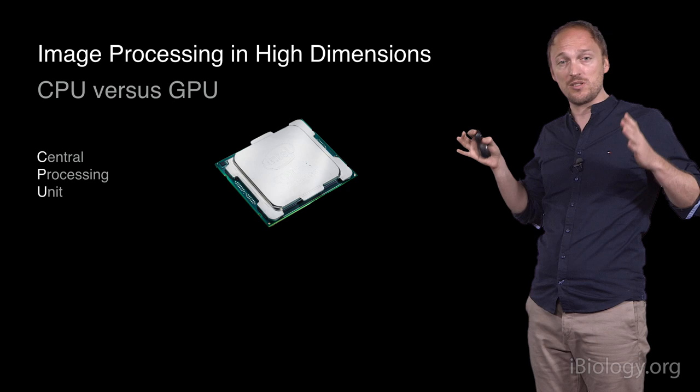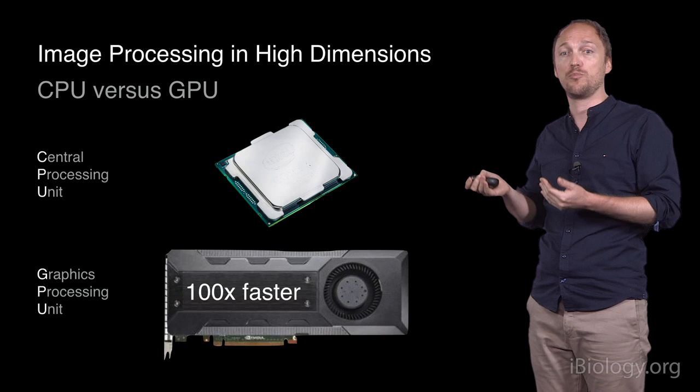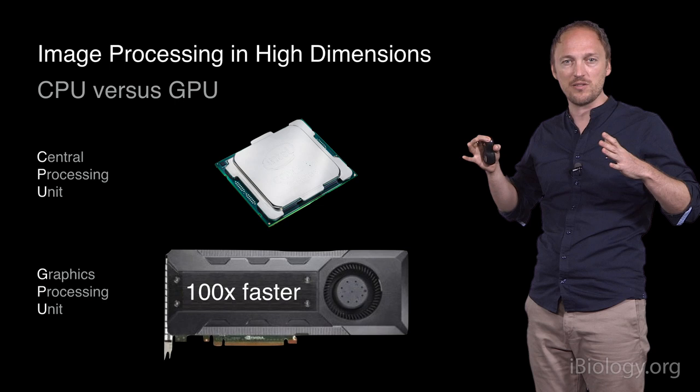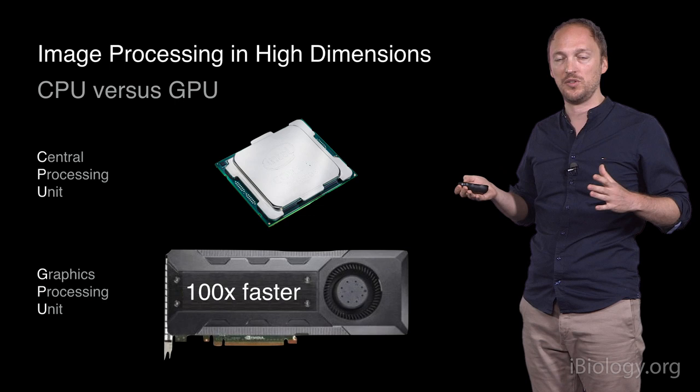When in the past most image processing was done on the central processing units of computers, today the processing is shifting to graphical processing units. These GPUs are designed to operate on arrays of voxels in parallel, and are thus oftentimes 100 times faster than CPUs for image processing.